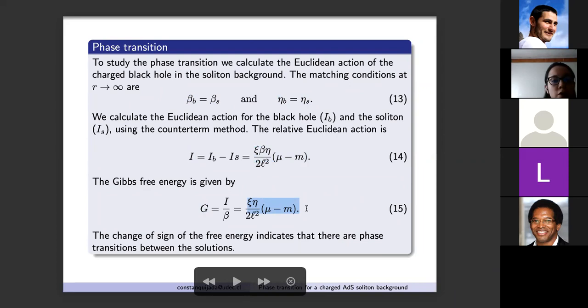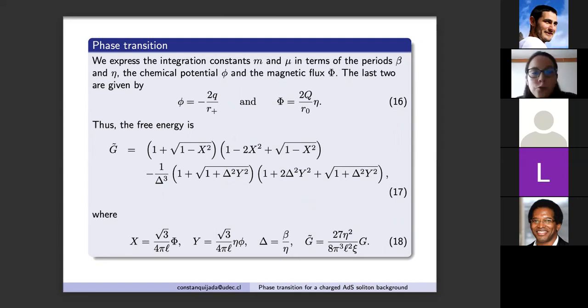From the Euclidean action we can obtain the Gibbs free energy which is equal to the right hand side of equation fifteen. We can see that there is a change of sign in the free energy depending on the value of mu and m. This change of sign indicates that there are phase transitions between the solutions. In order to study the phase transitions we will express the free energy in terms of the boundary conditions. We express the integration constants m and mu in terms of the period theta and eta, the chemical potential T, and the magnetic flux capital Phi.